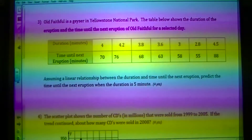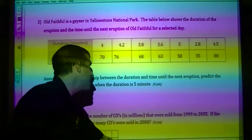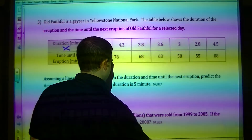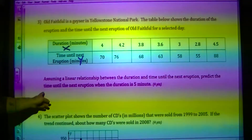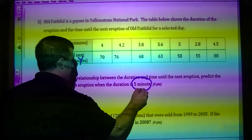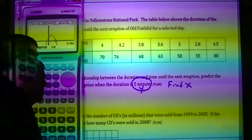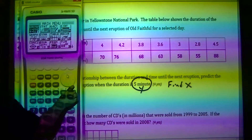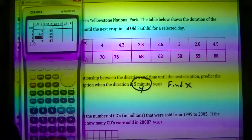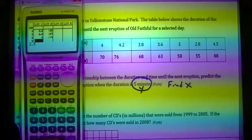Question number three: this is X, this is Y. Assuming a linear relationship, predict the time for the next eruption in 5 minutes. Minutes is Y, so I have to find X. Going to menu, stat, and typing in: 4, 4.2, 3.8, 3.6, 3, 2.8, 4.5.